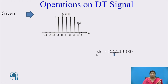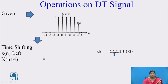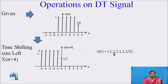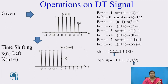This is the x(n) given. In sequential form, we can represent x(n) like this, where the arrow represents the origin. To get x(n + 4), we shift this signal towards the left side by 4 units. In x(n + 4), the signal is shifted left by 4 units, so the origin is at the 1/2 position. We can verify: for n = -1, x(n + 4) = x(3) = 1. For n = 0, x(0 + 4) = x(4) = 1/2.